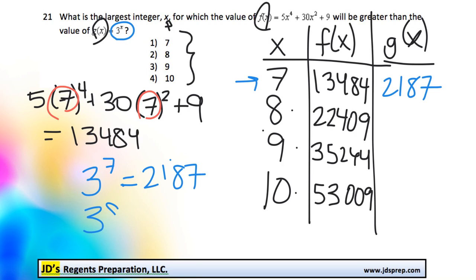And then we would figure out what 3 to the power of 8 is, and that is 6,561. 3 to the power of 9 is 19,683. And then the last one, 3 to the power of 10, would be 59,049.